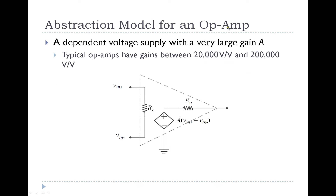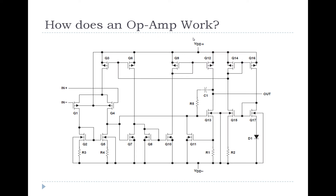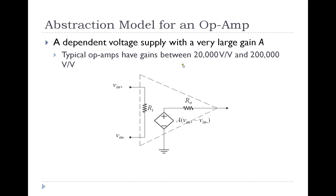Thankfully, we have an abstraction model for the op-amp. Instead of worrying about how all of the transistors are biased, we can abstract the model and pretend that it behaves like this. The abstraction model takes the non-inverting terminal and the inverting terminal — those two terminals are connected with a resistive element Ri. The output terminal is simply a dependent voltage source connected through a resistor, and that dependent voltage source provides an output voltage proportional to the difference between the potentials across the input terminals, multiplied by a very large gain factor A.